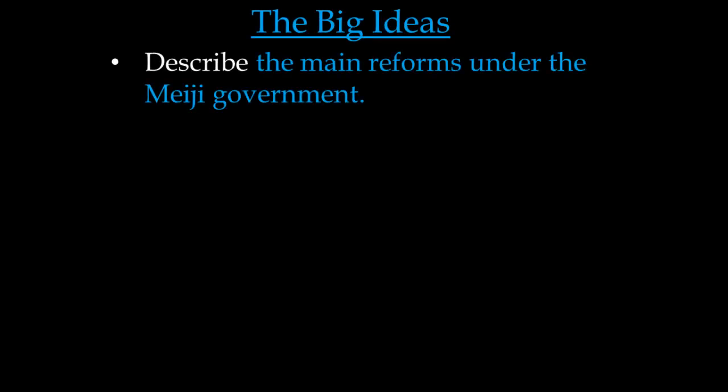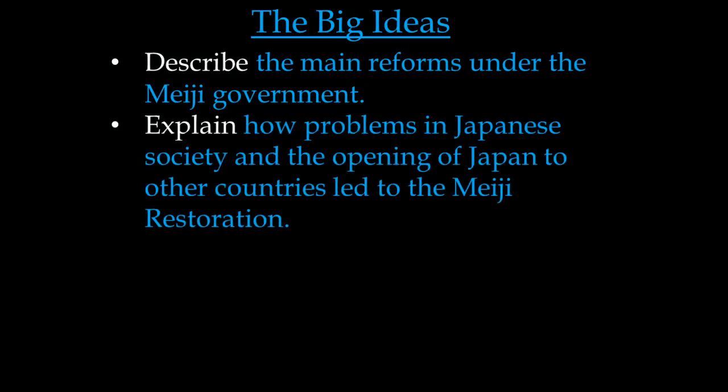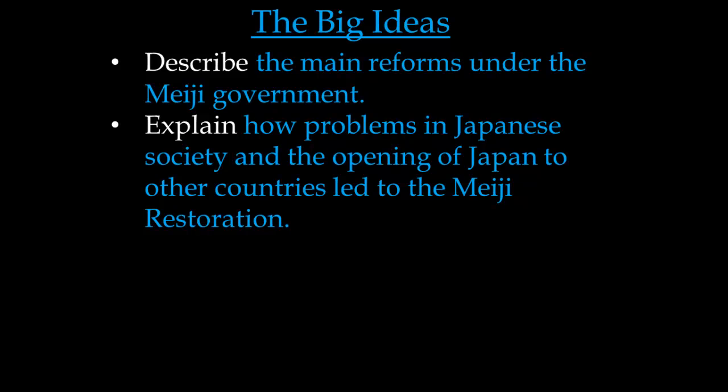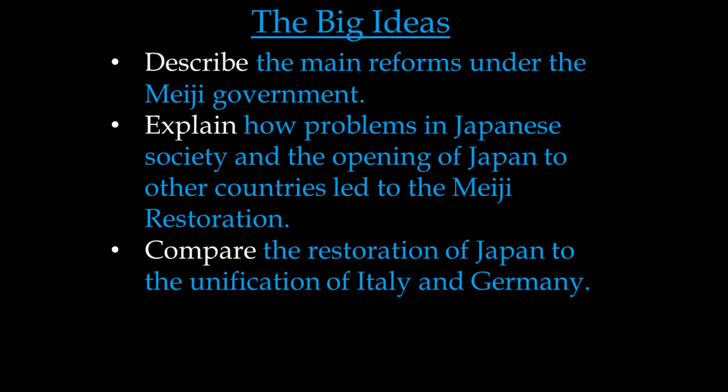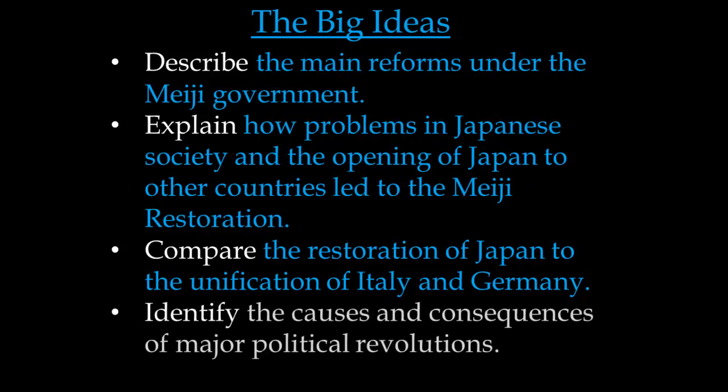Let's review the big ideas. First, describe the main reforms under the Meiji government — we saw social, economic, government, and military reforms. Second, explain how problems in Japanese society and the opening of Japan led to the Meiji Restoration. Third, compare the restoration of Japan to the unification of Italy and Germany — if you've watched the previous videos, you should be able to do that on your own. Finally, identify the causes and consequences of major political revolutions.